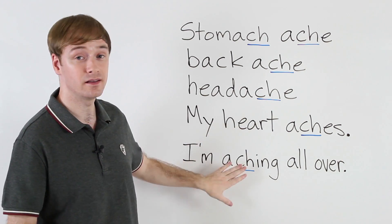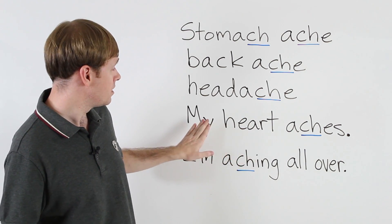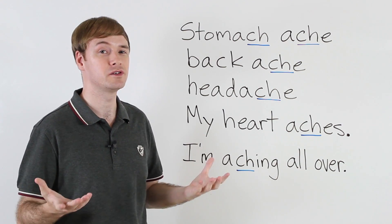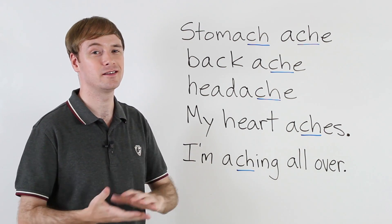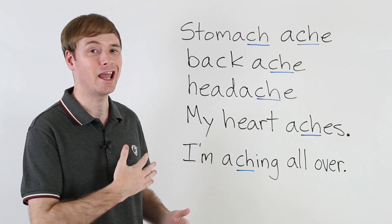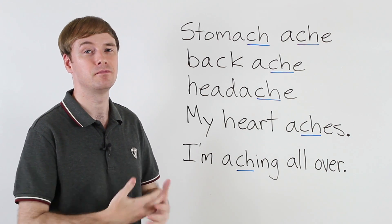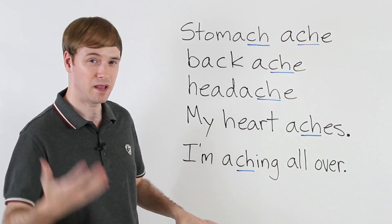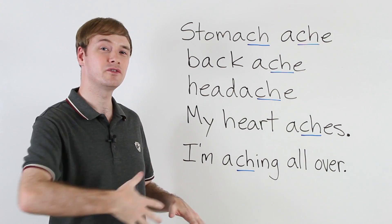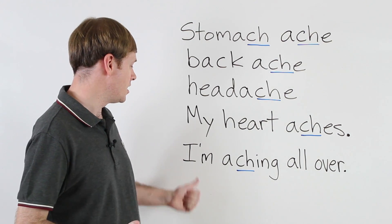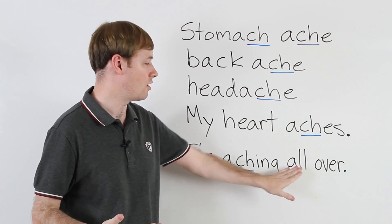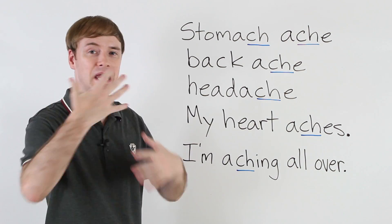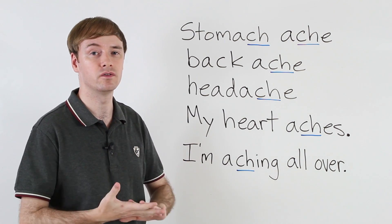Let's look at these sentences. My heart aches. Maybe I broke up with some girl — I can say, my heart aches. Or if I have pain all over my body, I can say I'm aching all over. I have pain all over.